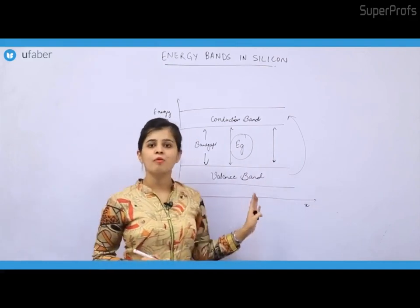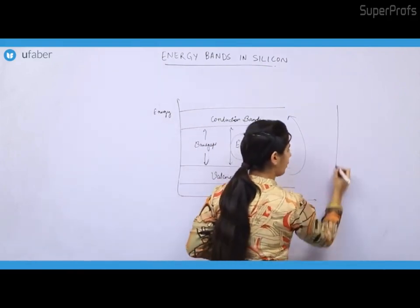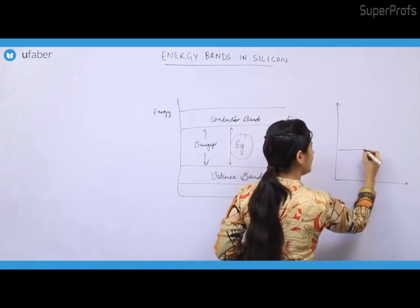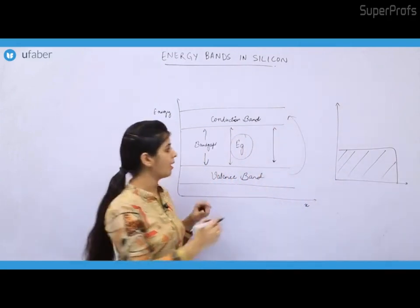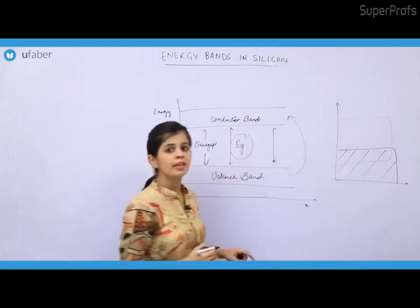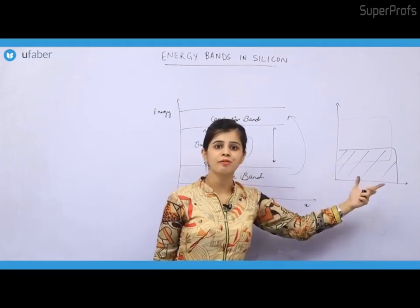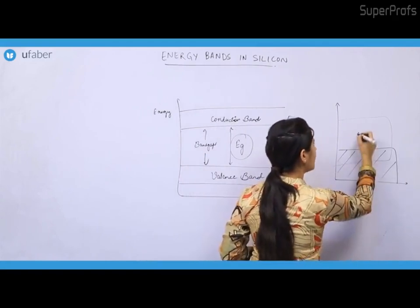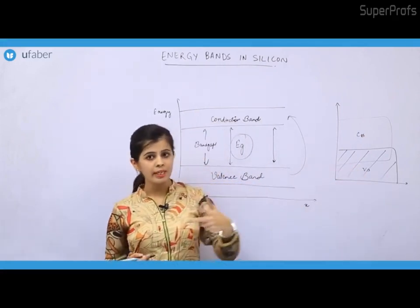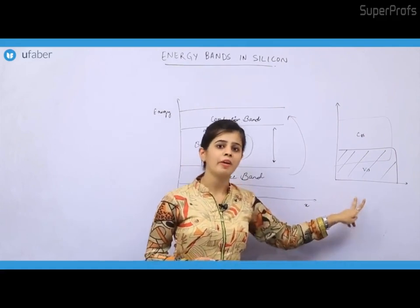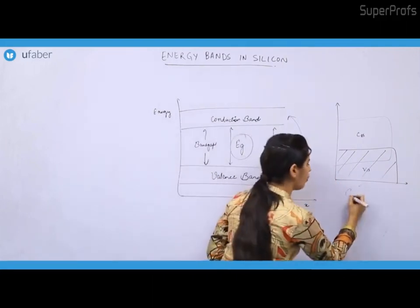Now, this is the case for silicon. If I talk about metals or conductors, the valence band and the conduction band have an overlapping between them. That means electrons don't have to gain energy to move from the valence band to the conduction band because these bands are already overlapping. So in case of metals, the electrons can very easily move. That is why metals are very good conductors of electricity.